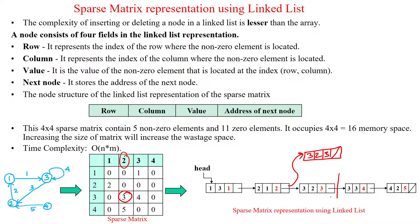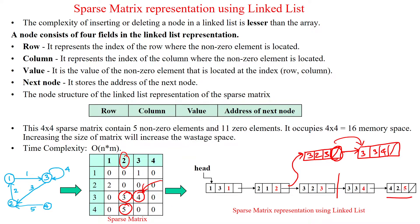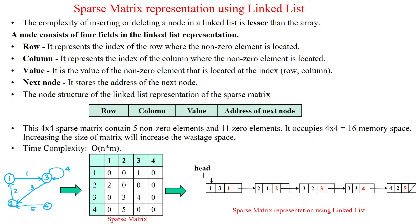As of now, three nodes are in the list. The next node is created with four fields: row number three, column number three, and value four, initially with null. The previous node's next field is updated with the address of this newly created node. For the fifth element, a node is similarly created and linked. The last node has a null field, indicating no more nodes in the linked list.